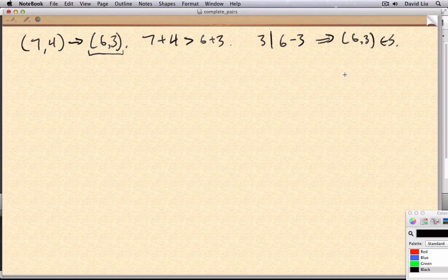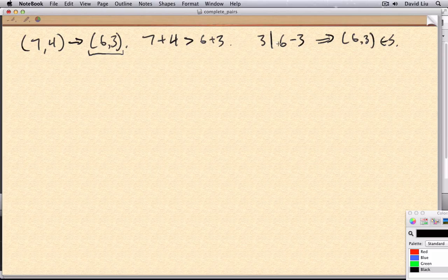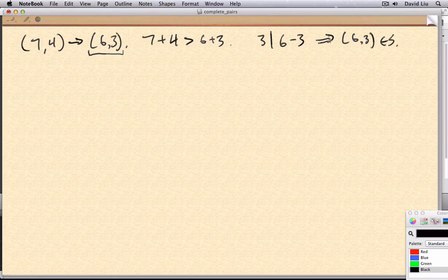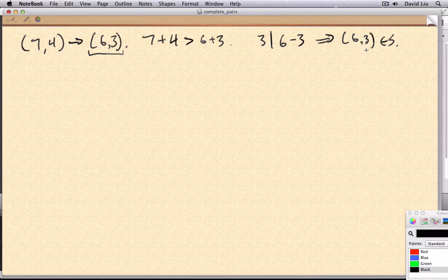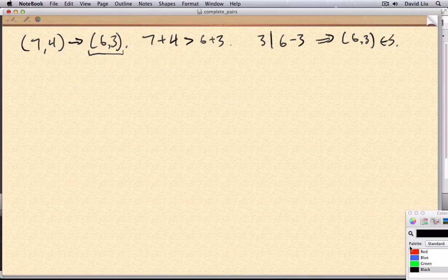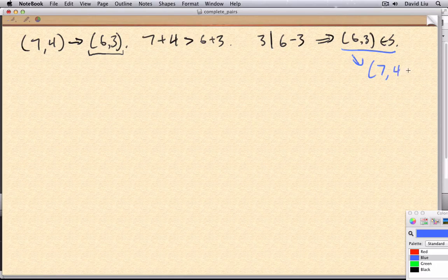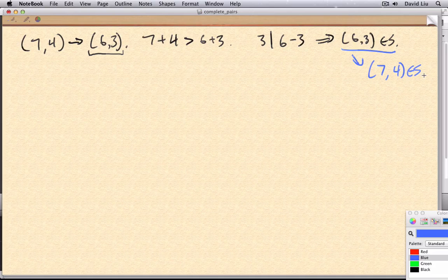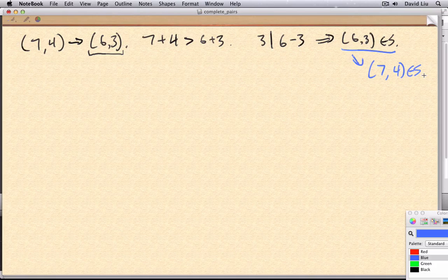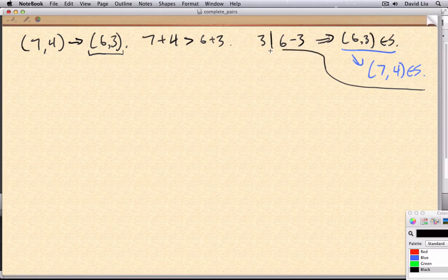Remember that our induction hypothesis says that if the sum is smaller and in this case, if x minus y is divisible by 3, then x,y is in s. And the whole purpose of this was if we establish that 6,3 is in s, then applying the first recursive rule gives us that 7,4 is also in s. Essentially, what we've done is taken a step backwards using the recursive rule and then applied the induction hypothesis. So let's make that argument more formal now using our x and y from earlier.